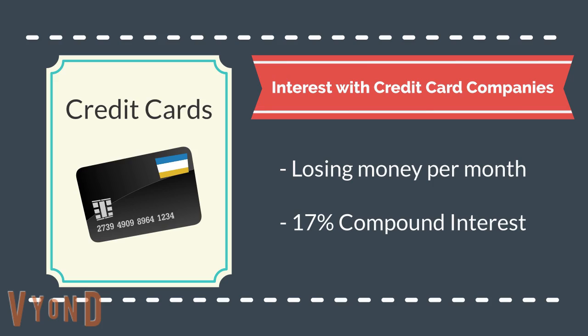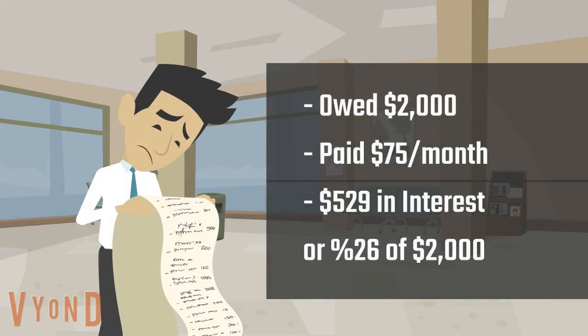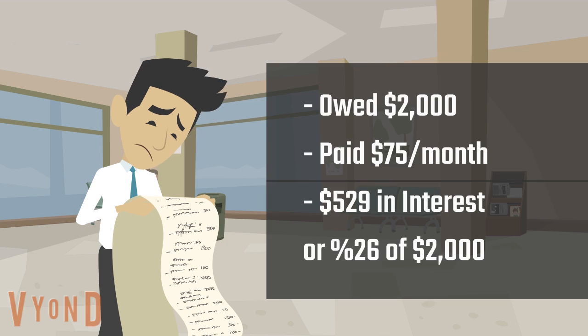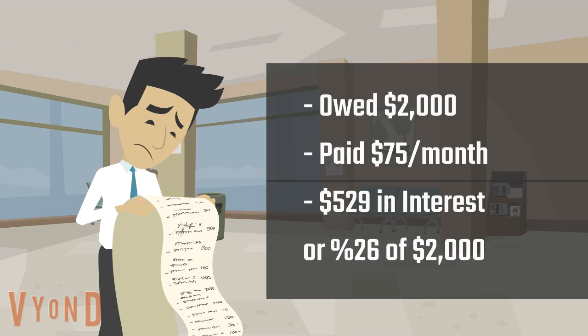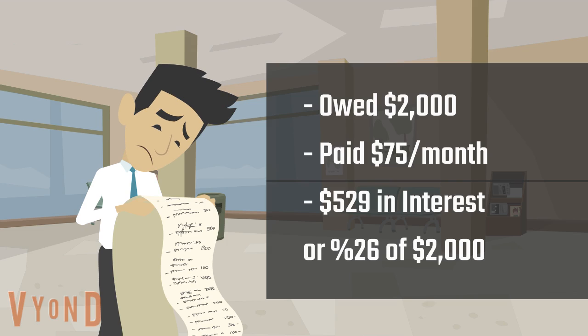The same principle applies to that as well, but instead of accumulating wealth, you are losing it. Currently, credit card interest rates on average are approximately 17%. Credit card companies use the same compound interest philosophy to calculate what you owe them if you carry a balance. If you charged $2,000 on your credit card and only paid $75 a month, it would take you 34 months to pay it off, and you would have paid $529 in interest — so really, you will have paid 26% extra in interest to borrow the $2,000.